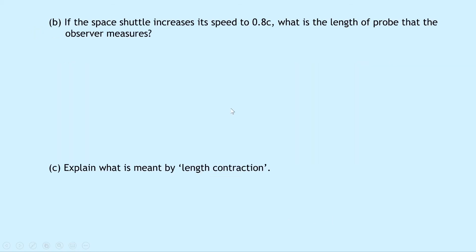Part B says if the space shuttle increases its speed to 0.8 times the speed of light, what is the length of probe that the observer measures? Well this is very similar to what we just did in part A but we're now just using a different speed because we're still asked to find the relativistic length.